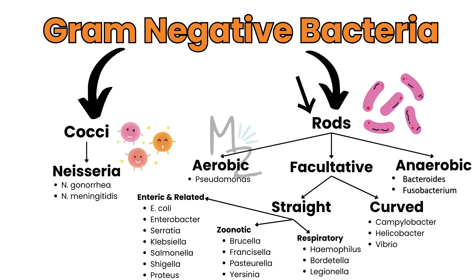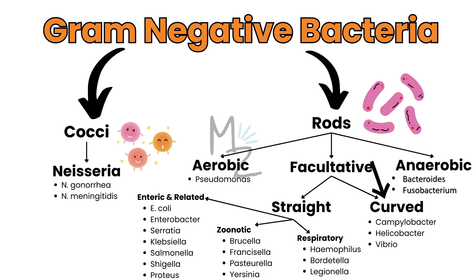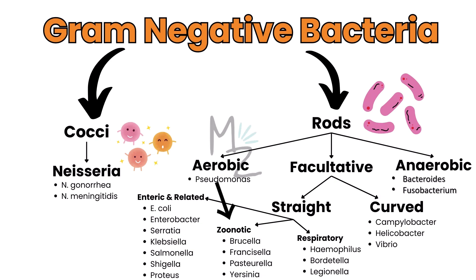Gram-negative bacteria are also classified into rods, further subdivided into aerobic like Pseudomonas, anaerobic like Bacteroides and Fusobacterium, and facultative. Facultative rods are subdivided into curved — including Campylobacter, Helicobacter, and Vibrio — and straight, which includes enteric and related bacteria such as E. coli, Enterobacter, Serratia, Klebsiella, Salmonella, Shigella, and Proteus. Also into zoonotic, which includes Brucella, Francisella, Pasteurella, and Yersinia, and into respiratory, which includes Haemophilus — the topic of today's video — Bordetella, and Legionella.